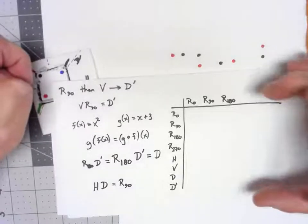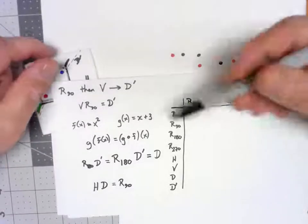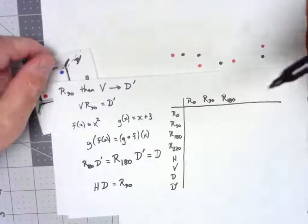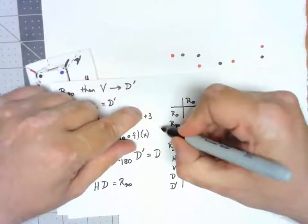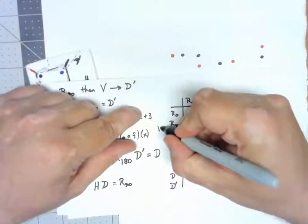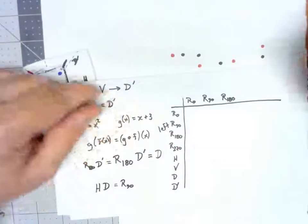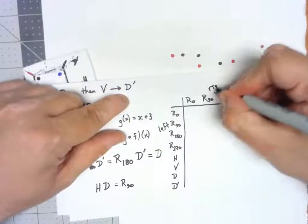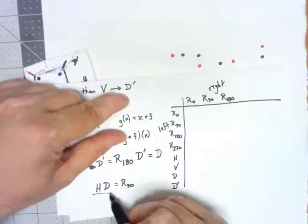This is called a Cayley table. And we're going to do it the same way we did it here. So, this up and down is going to be our left. This is going to be our right when we write it like this HD.